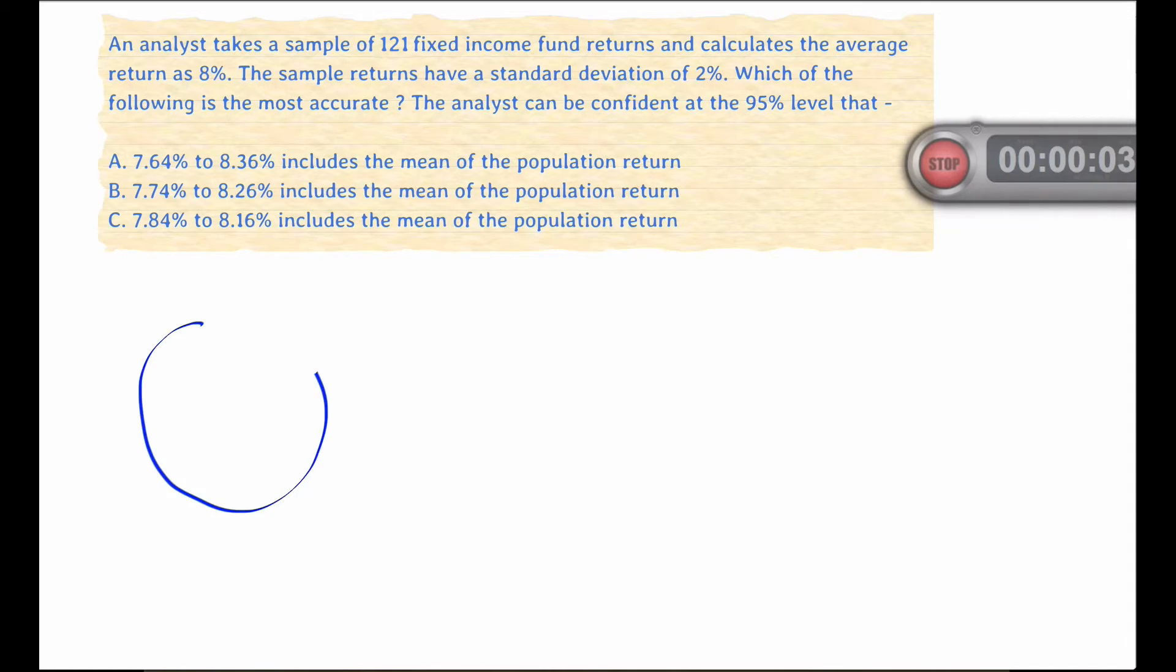Okay, so here we're given a situation where there's a population of fixed income fund returns. That population has a certain mean and a standard deviation which we are not given. Now our analyst has taken a large sample size and the average of his sample has turned out to be 8% and the standard deviation of the sample is 2%.